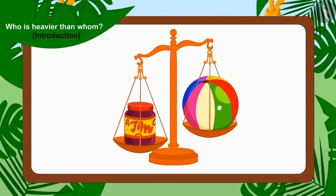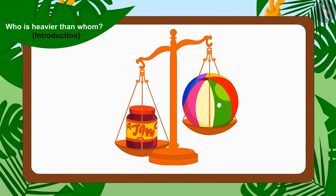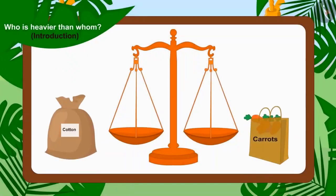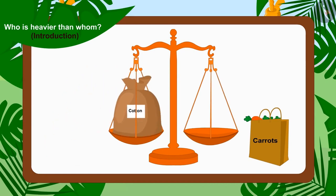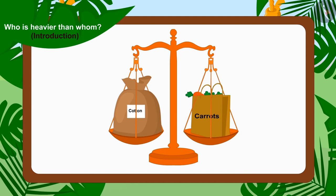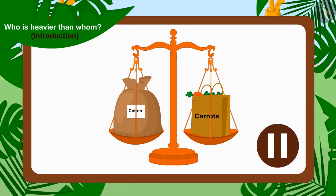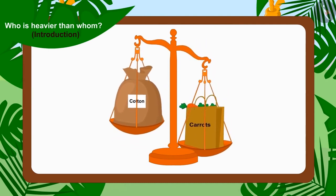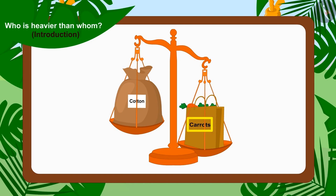The weighing scale will tip towards the side of the plate which has more weight on it. Uncle first placed Bhola's sack on one plate and Bunny's bag of carrots on the second plate. The weighing scale tipped towards Bunny's carrot bag. That is why Bunny's carrot bag is heavier than Bhola's bag full of cotton.